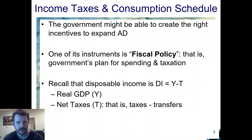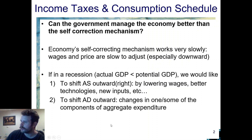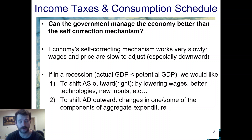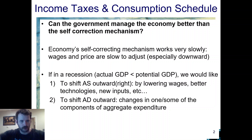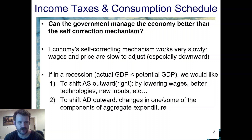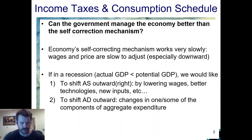The government can shift out aggregate demand using fiscal policy. Remember, any component of aggregate expenditure — immediately one of them is easier to monitor than the others, and that's government expenditure. They can directly increase government expenditure in order to raise aggregate expenditure and shift out aggregate demand, because there's no reacting price change when you just increase government expenditure. They could also decrease taxes, which would raise consumption expenditure because you do have more disposable income, and that would then also lead to additional aggregate expenditure.